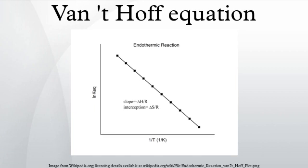A chemical reaction may undergo different reaction mechanisms under different temperatures. In this case, a Van't Hoff plot with two or more linear fits may be exploited. Each linear fit has a different slope and intercept, which indicates different changes in enthalpy and entropy for each distinct mechanism. The Van't Hoff plot can be used to find the enthalpy and entropy change for each mechanism and the favored mechanism under different temperatures. In the example figure, the reaction undergoes mechanism 1 at high temperature and mechanism 2 at low temperature.